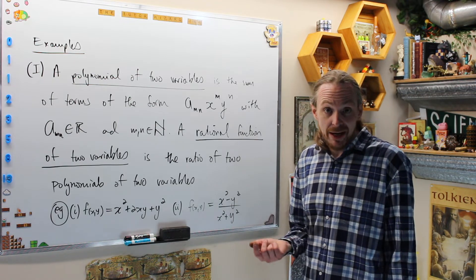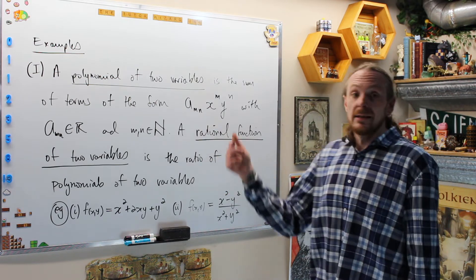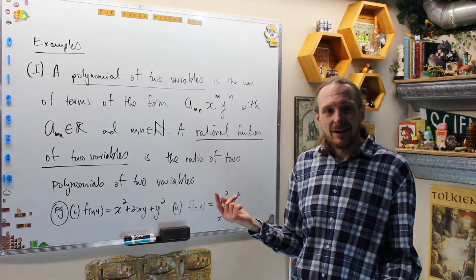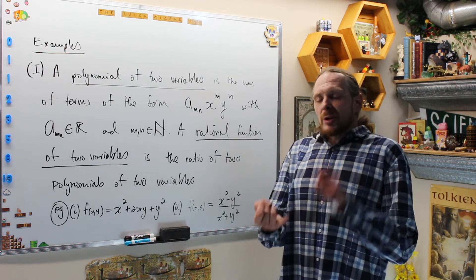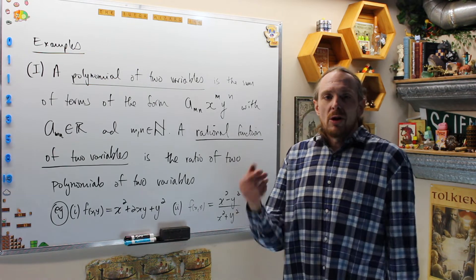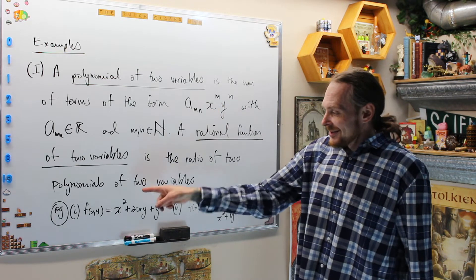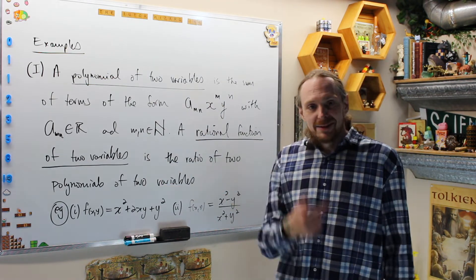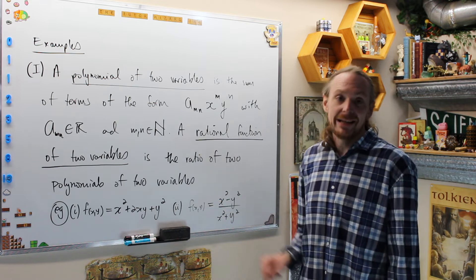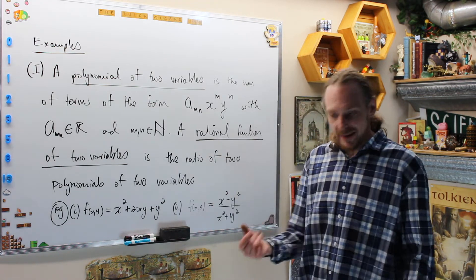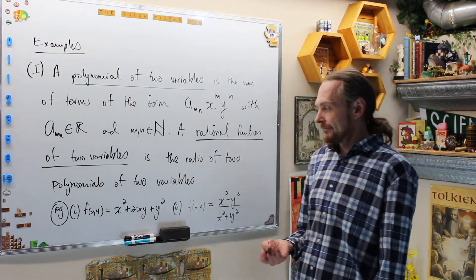In one dimension we have a theorem that trigonometric functions, polynomials, rational functions, root functions, and power functions are all continuous on their domains. The exact same thing holds here: polynomials and rational functions of two variables are continuous on their domains. So as long as the point is in the domain, you don't have to check — the limit exists and equals f(a, b) as you approach (a, b).